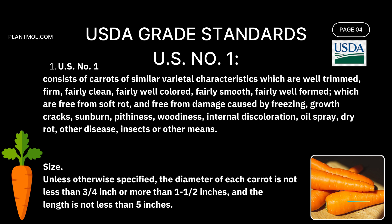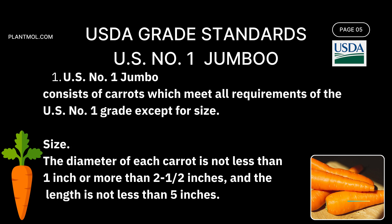U.S. Number One Jumbo consists of carrots which meet all requirements of the U.S. Number One grade except for size. The diameter of each U.S. Number One Jumbo carrot is not less than one inch or more than two and a half inches, and the length is not less than five inches.